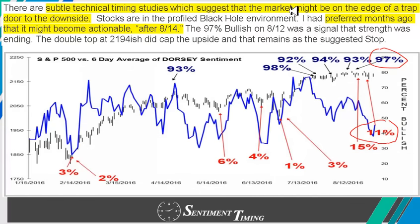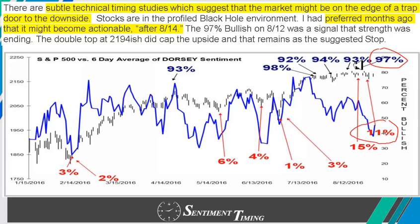We came back up and tested it again. We had a 97% bullish reading on the 12th, and that was the signal that the strength was ending. Then we had a double top at 2194. There are a lot of technical aspects looking for the trap door — notice how everybody is on the bullish side. Nobody's looking down, wave counts are pointing up — and what happens is they get trapped on the long side because they're only looking up and don't realize that everybody's already in the market. From there you get the trap door with a 180, 200, 300-point drop.